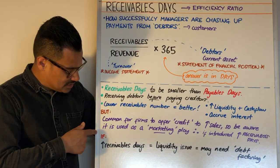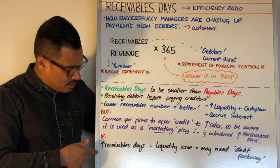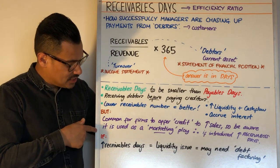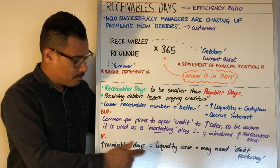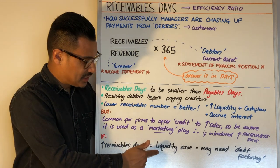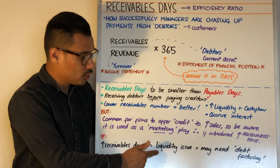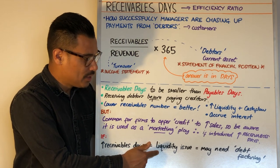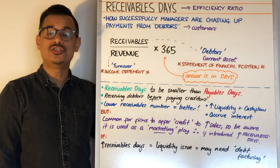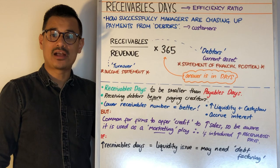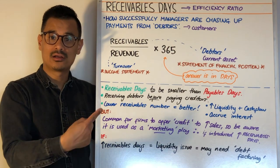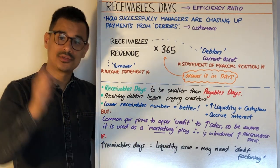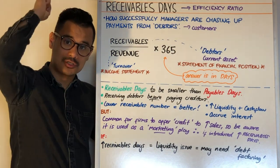The last thing to consider is that a very high receivables days number suggests a cash or liquidity issue, and you may in that case need to use debt factoring. See you at the next session.